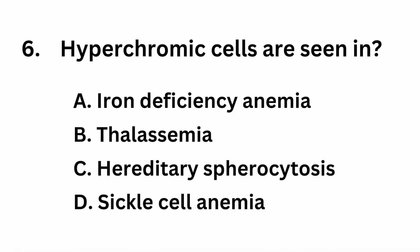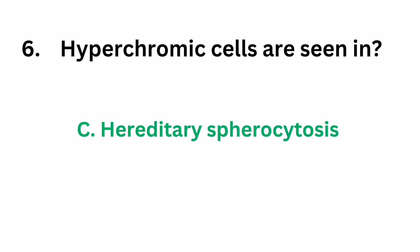Question number 6: hyperchromic cells are seen in. Option A, iron deficiency anemia. Option B, thalassemia. Option C, hereditary spherocytosis. Option D, sickle cell anemia. The correct answer is option C, hereditary spherocytosis.